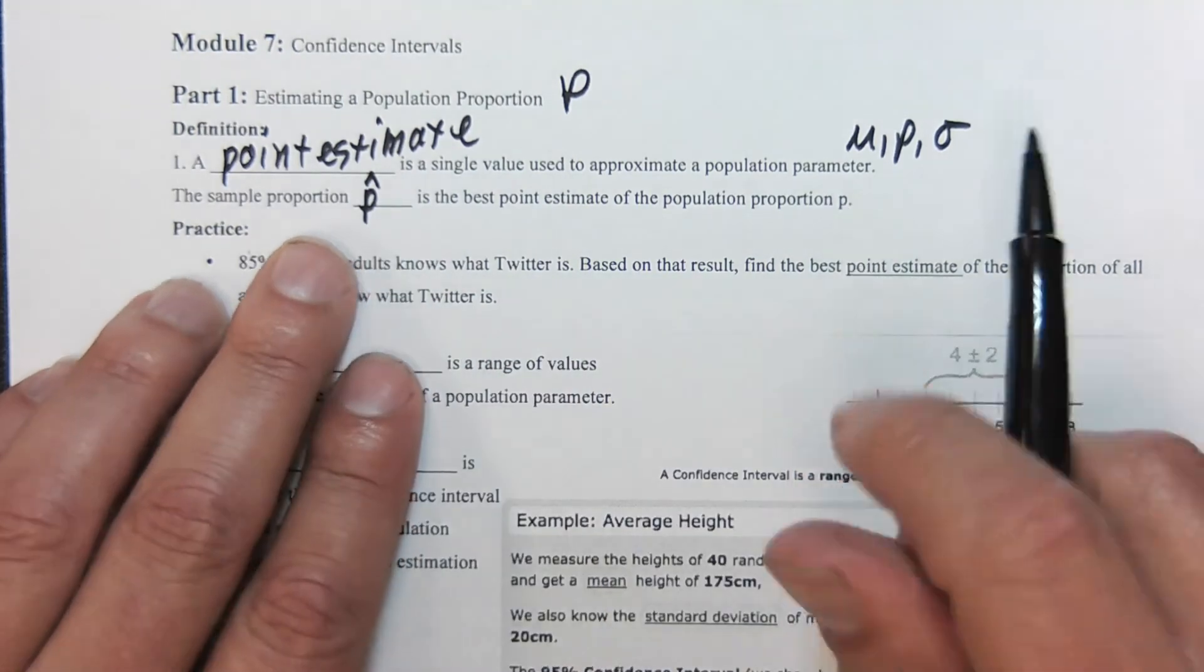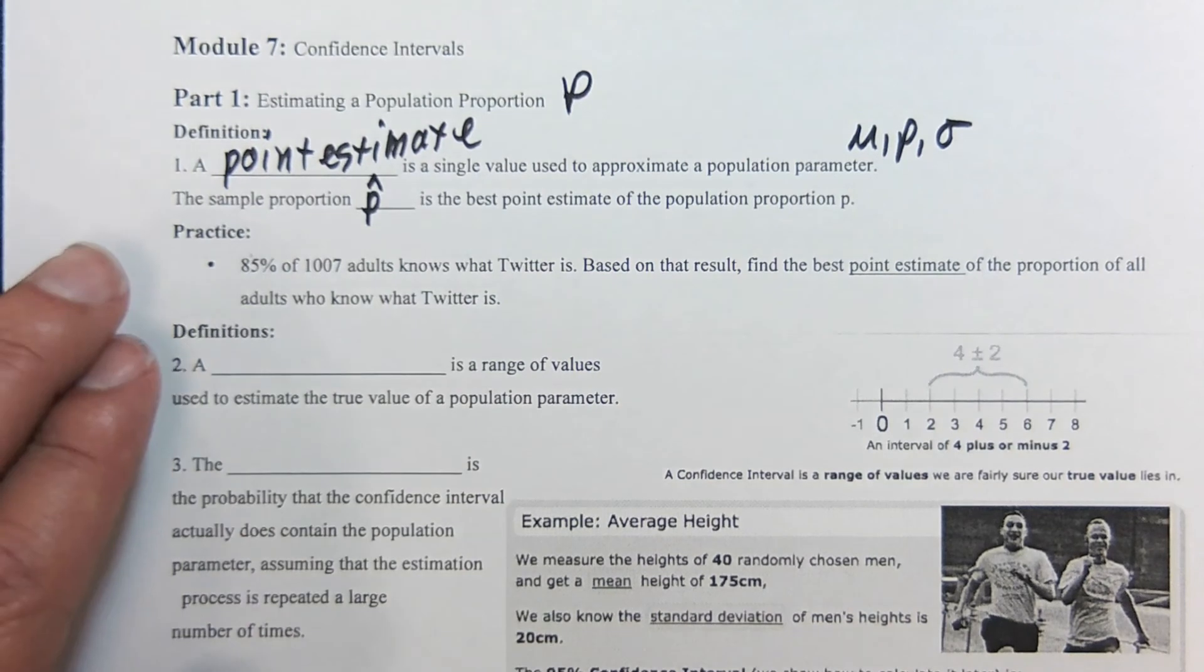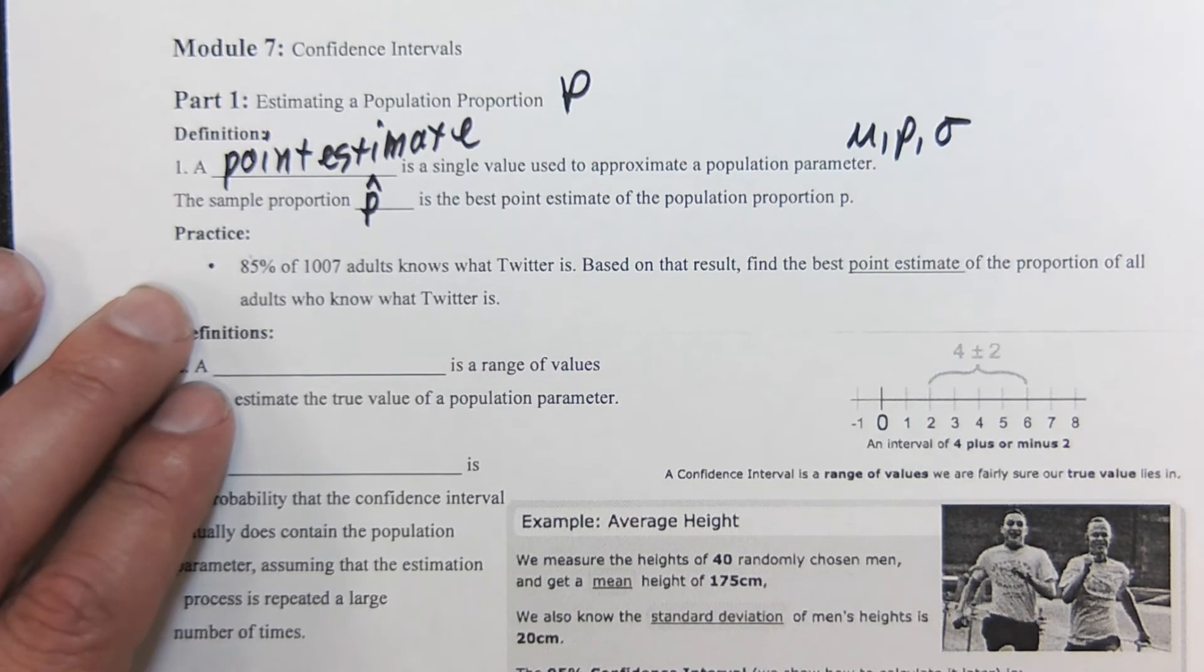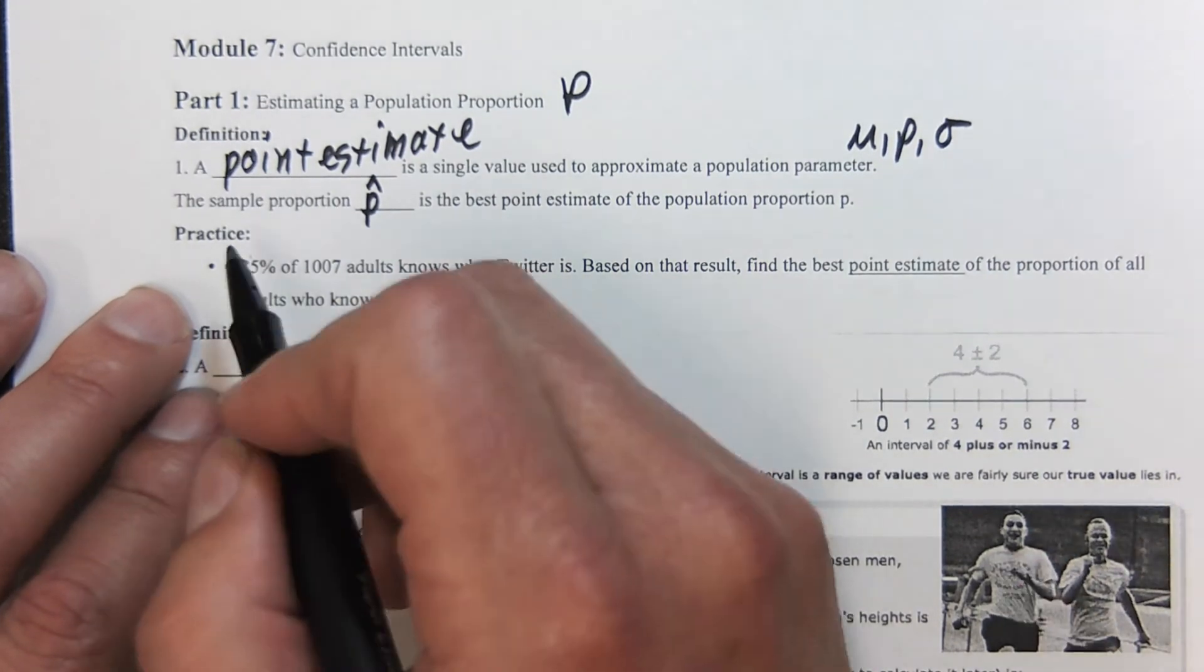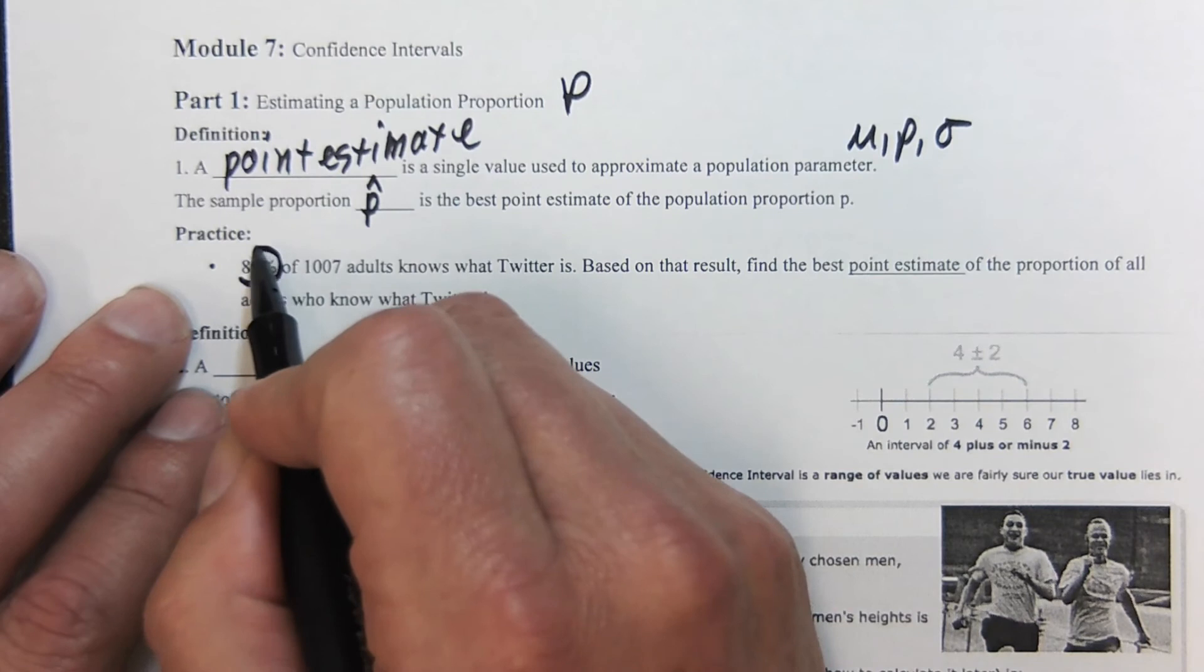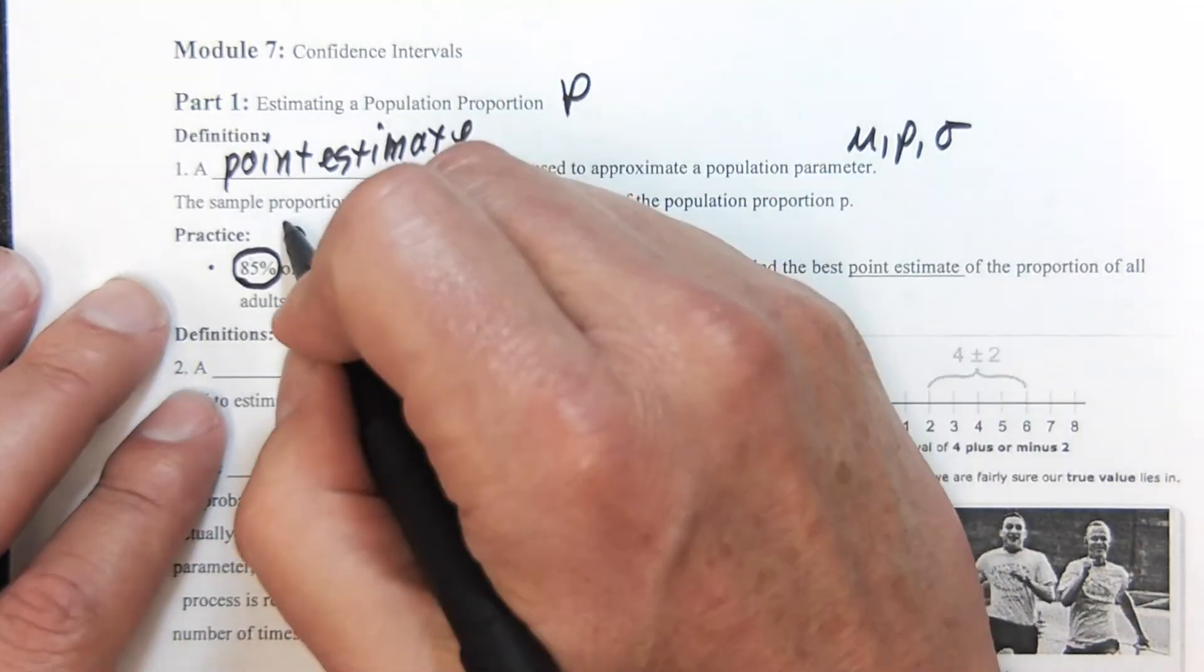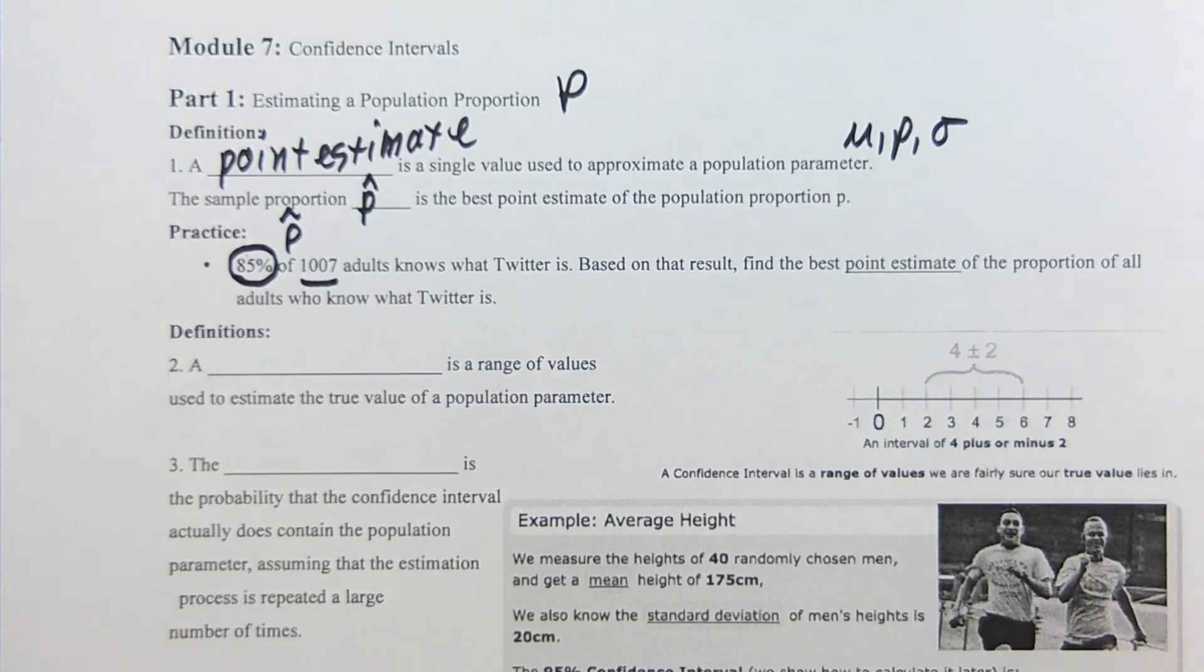Let's do a quick practice. 85 percent of 1007 adults show what know what Twitter is—I'm sure that's higher now because of a certain president that we have. So our p hat for me, because it's from a sample, this is our sample proportion and that's the best point estimate that we have.